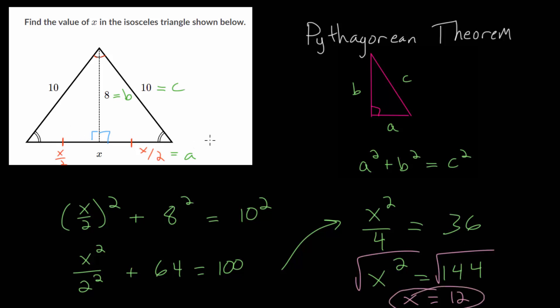So this long side is 12, which means these smaller side lengths, these x over 2, are each 6. So the big side is 12 and the smaller sides are 6, and this should make sense.